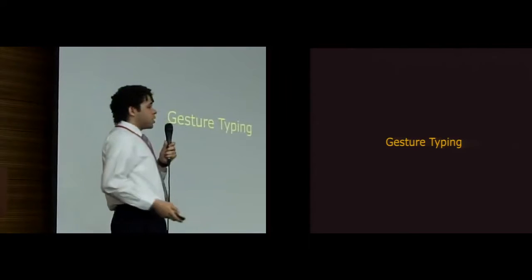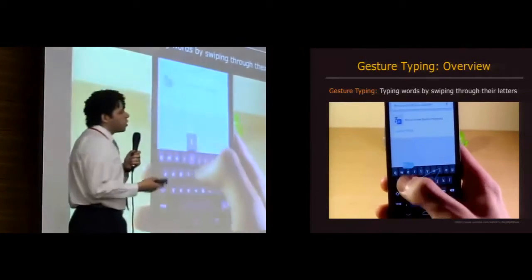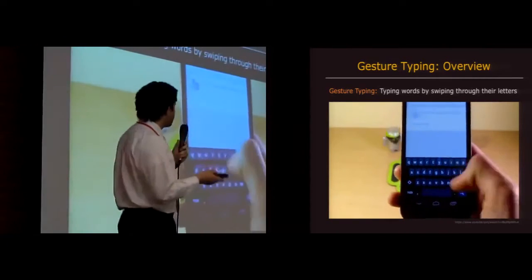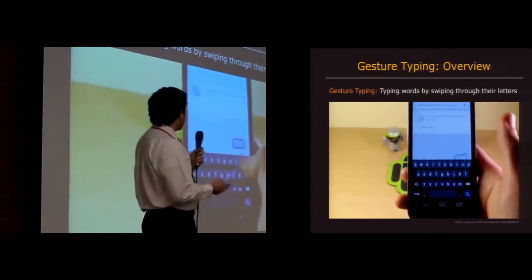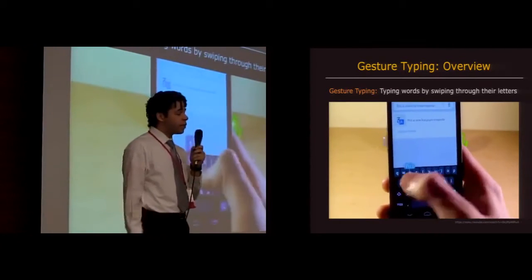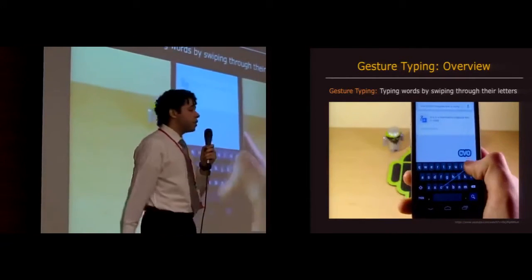So first, just to get started, for those of you less familiar, what is gesture typing? It's the notion of typing words on a touchscreen keyboard by connecting their letters with swipes, with strokes instead of taps. Unlike touch typing, you don't have to type spaces. That saves you about one-sixth of all characters typed, and your finger travels less because you don't have to lift it between letters.